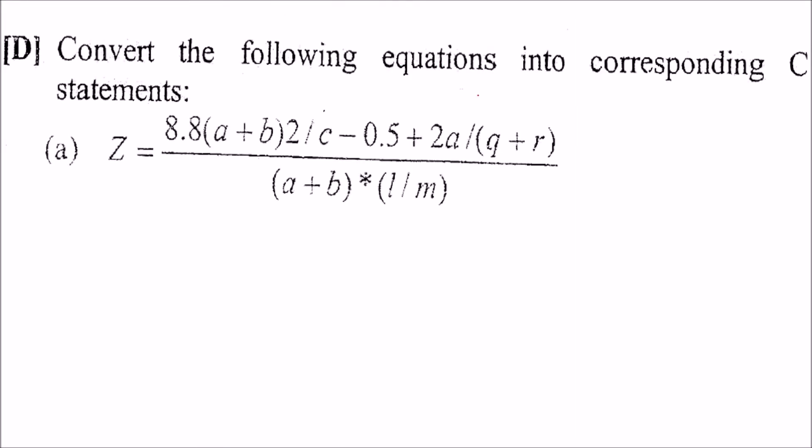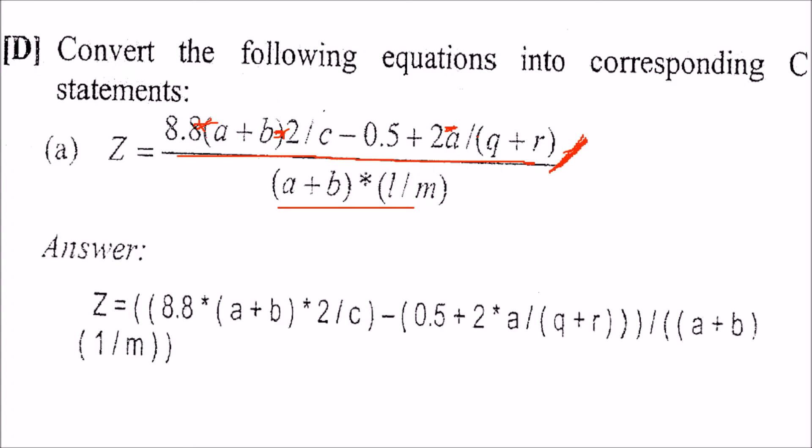We have to convert the following equation into corresponding C statement. So we have to put a star here, then we have a star here into, then we have a star here, then we have a star 2 into a, then this is okay, this is also okay. Now this division sign will be converted into this, you know, slash. This is how. And you can do one more thing. You know, that this can be kept in a round bracket, this can be kept in a round bracket, this can be kept in a round bracket, you know, all those which you have to do. You want this to be done first, so all this can be kept in a round bracket.